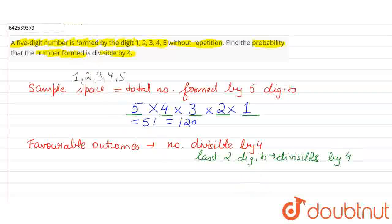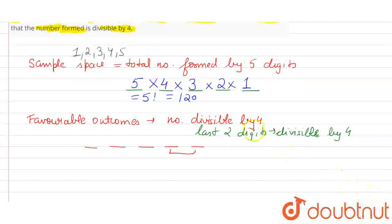So we have to make a 5-digit number. So 1, 2, 3, 4 and 5. In these 2 digits, only certain numbers can come like 12, 24, 32, and 52, because these all are divisible by 4.